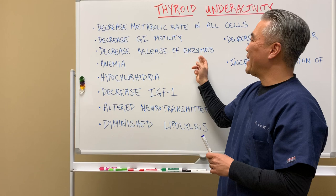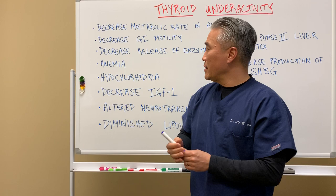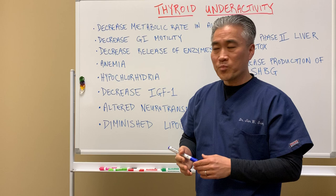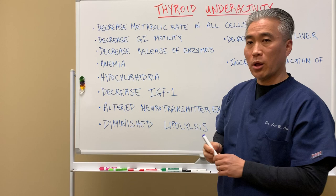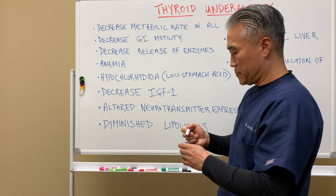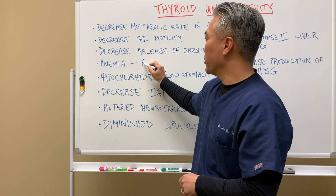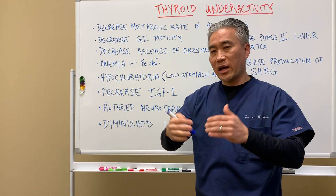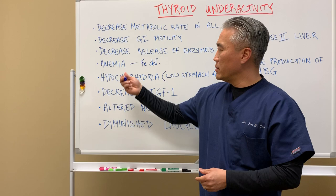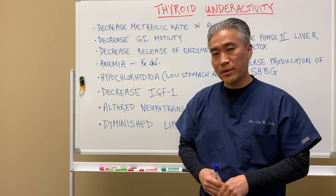Decreased GI motility combined with decreased release of digestive enzymes means you can't properly break down proteins, carbs, and fats, so you won't absorb nutrients properly. With hypochlorhydria — low stomach acid — and inadequate food breakdown, one leading consequence can be iron deficiency anemia. Even if a patient is taking enough iron and has no GI bleed, if they're still anemic, you have to ask whether they're actually absorbing it.